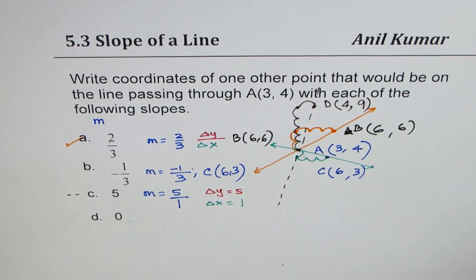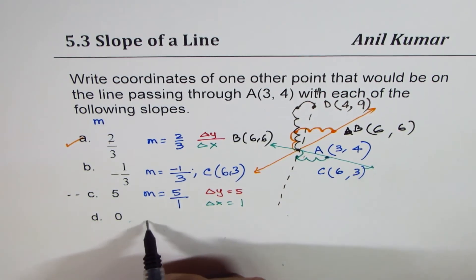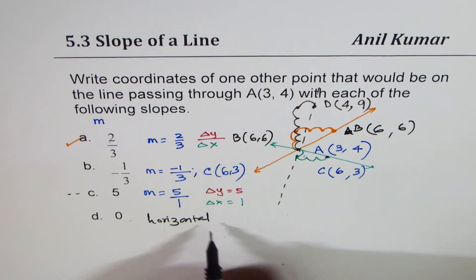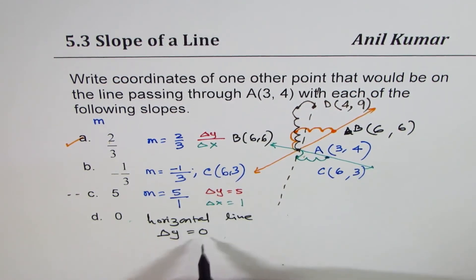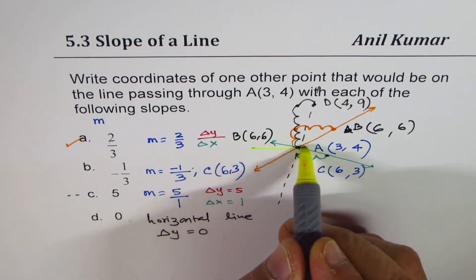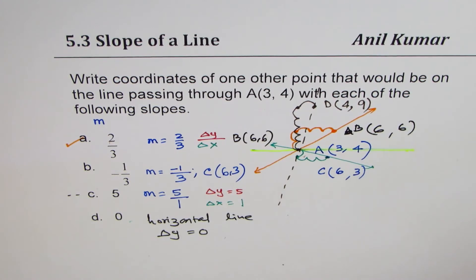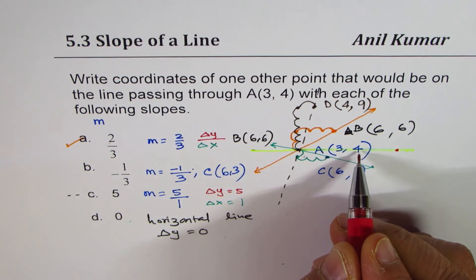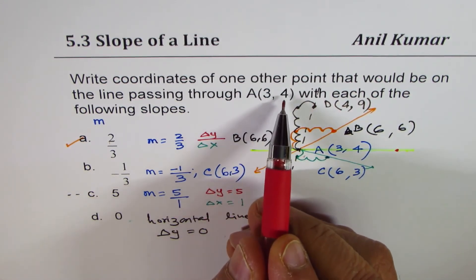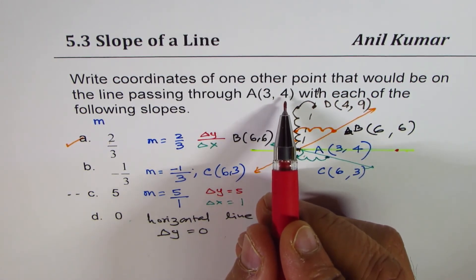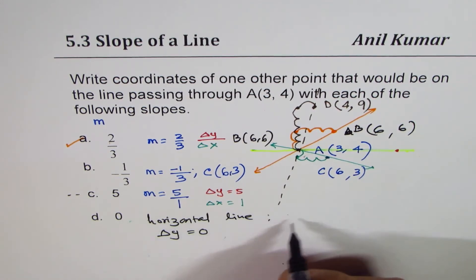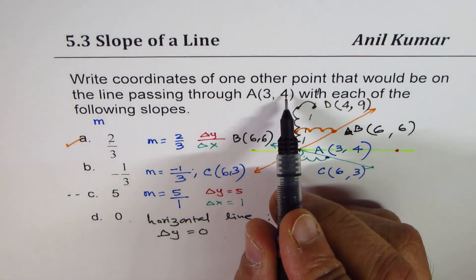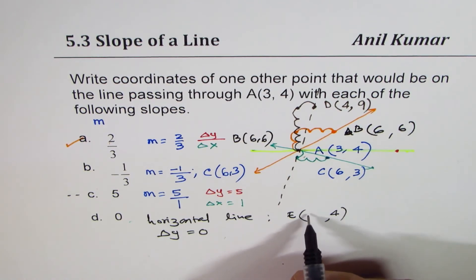When the slope is 0, that means a horizontal line — the line does not rise. Change in y equals 0. So a horizontal line gives a slope of 0. Any point on this line will have the same y value, which is 4, since it passes through A(3, 4). As x changes, y does not change — that is what a zero slope means.